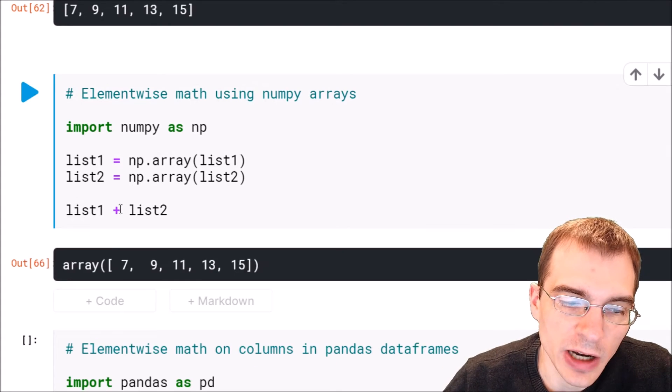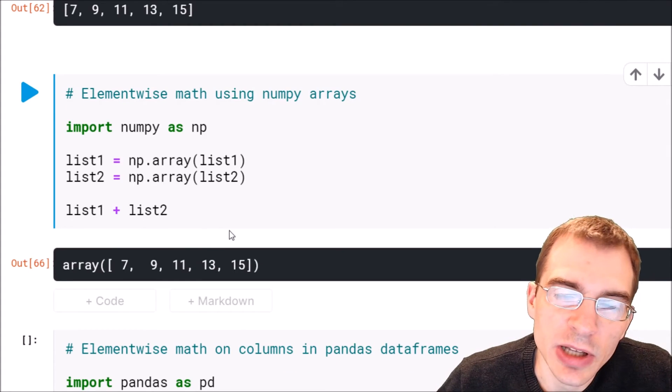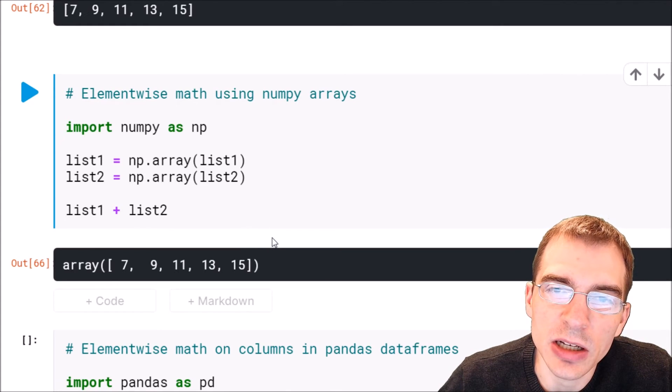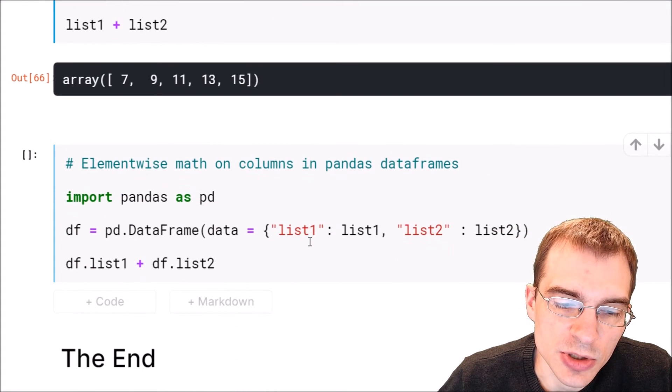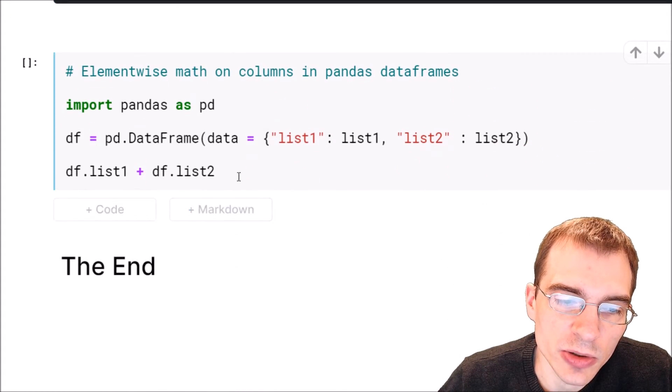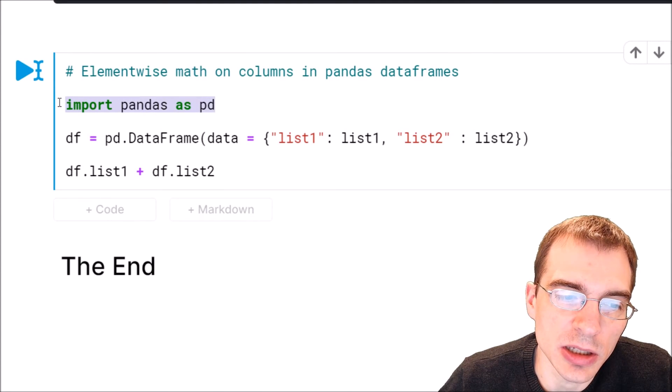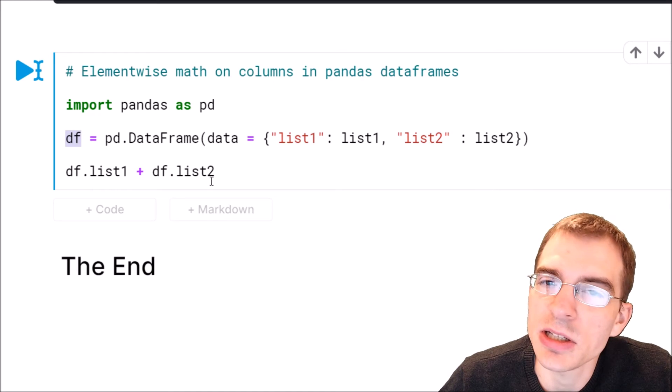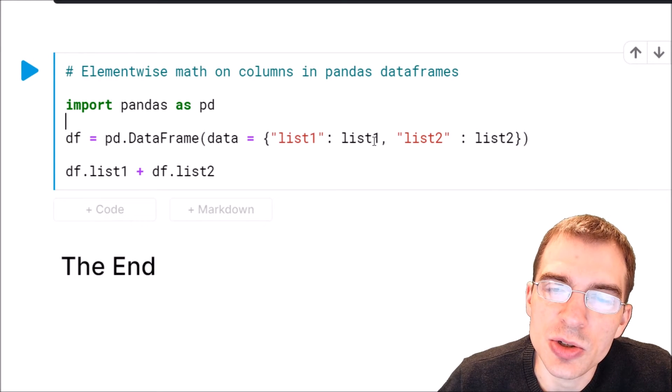One final way we could do this is if we have our data in the form of a pandas data frame, where we have different columns of data. We can do the same thing on two different columns. We'll show how that would work. We're going to import pandas as pd. We're just going to turn our two lists into a data frame—that's what this df is doing.